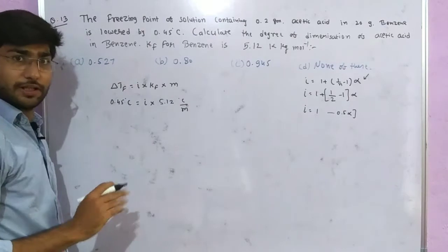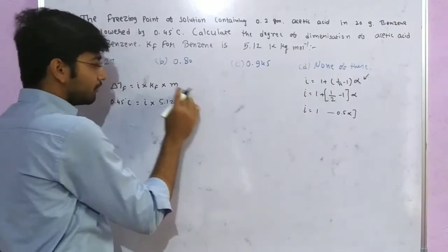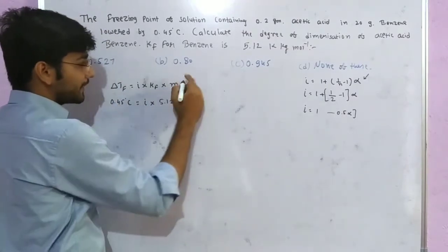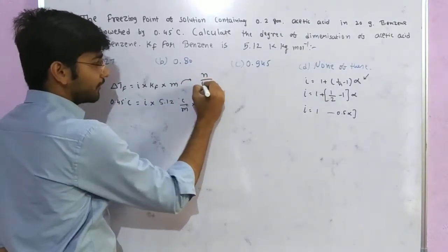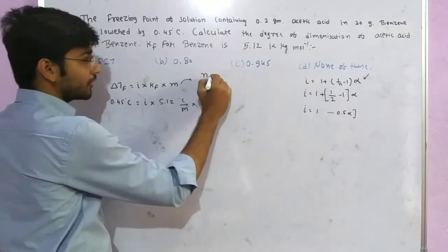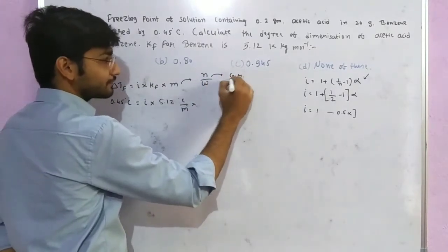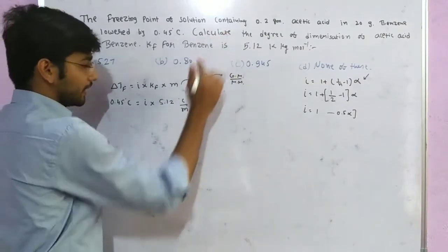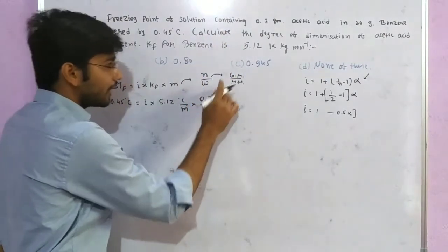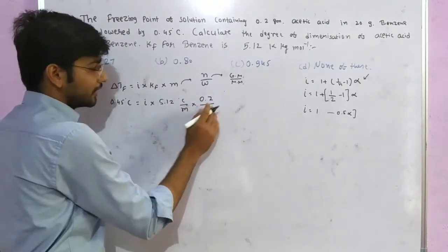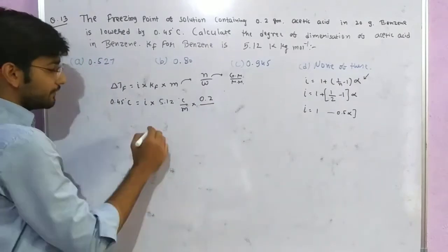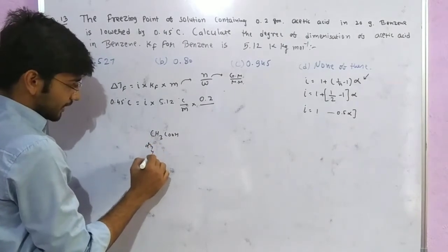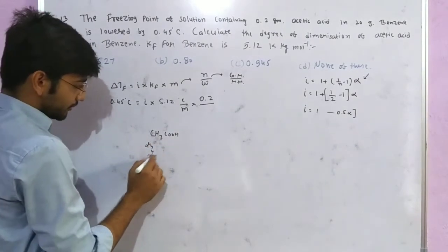Molality equals moles of solute upon weight of solvent in kilograms. Moles of solute equals given mass upon molar mass. The given mass of solute is 0.2 gram. The molar mass of acetic acid, CH3COOH, is 12 plus 4 plus 32, which equals...